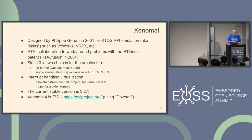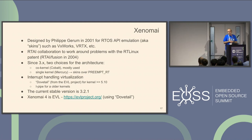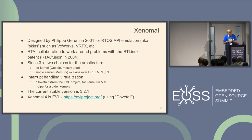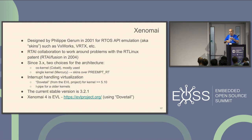Today there is I-Pipe for the older kernels. I-Pipe was designed at the time of the RTAI collaboration. And now there is a new version called Dovetail, which was originally a fork of I-Pipe. Philip developed a new project called EVL and a new system for managing interrupts called Dovetail. Dovetail is available for kernels greater than 5.10, and I-Pipe for older kernels. The current stable version is 3.2.1, and the EVL project will be Xenomai 4.